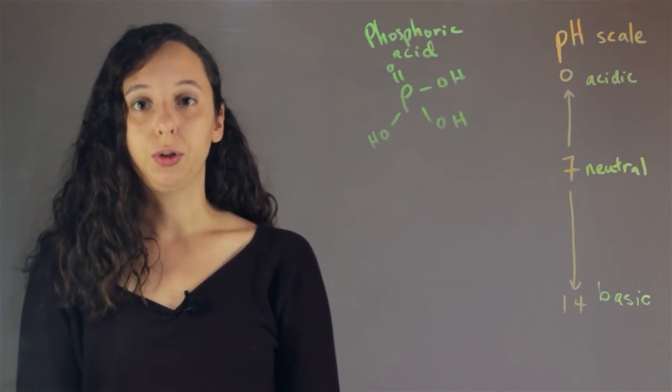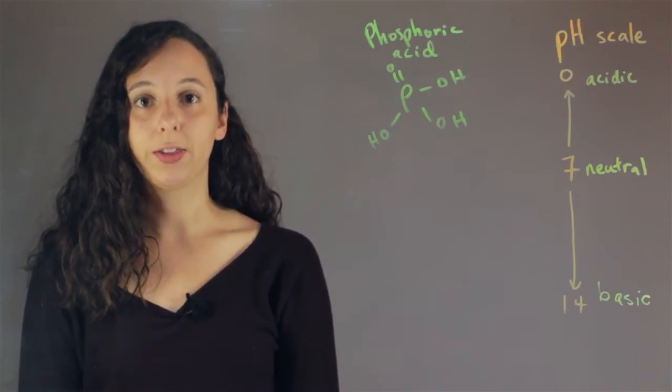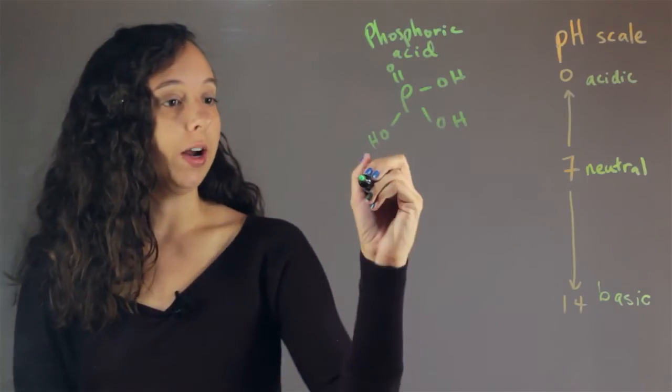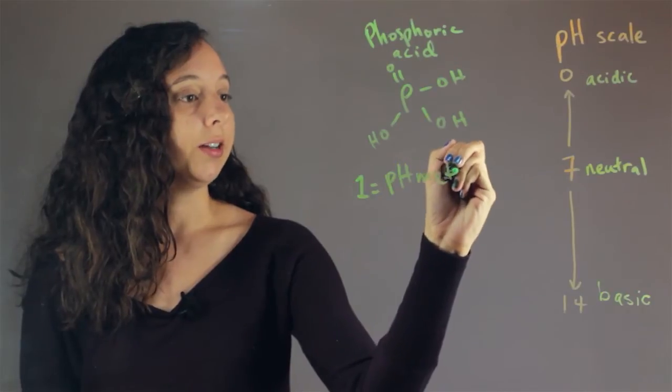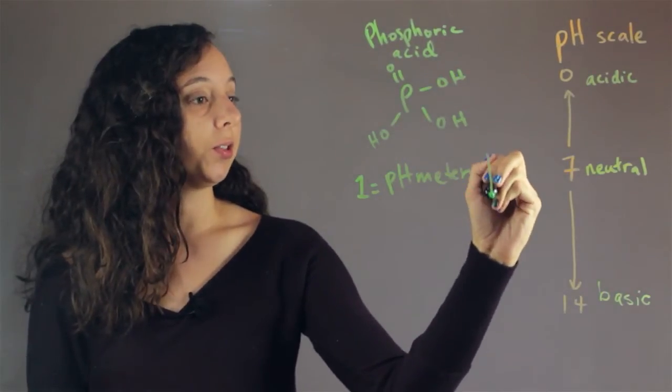But what we can do is use two common chemistry techniques to figure out the pH. So, technique one is using a pH meter. And what a pH meter is, is basically a measuring device that just tells you the pH.